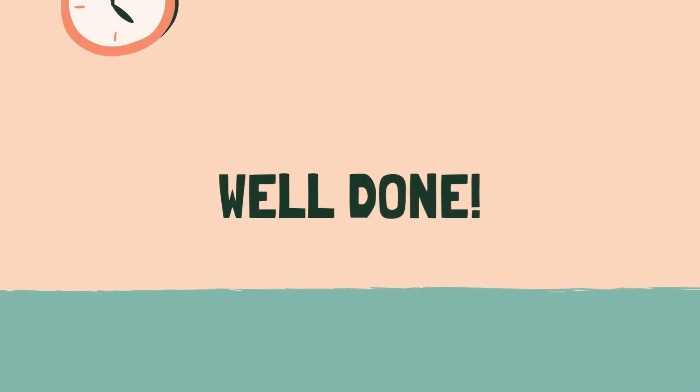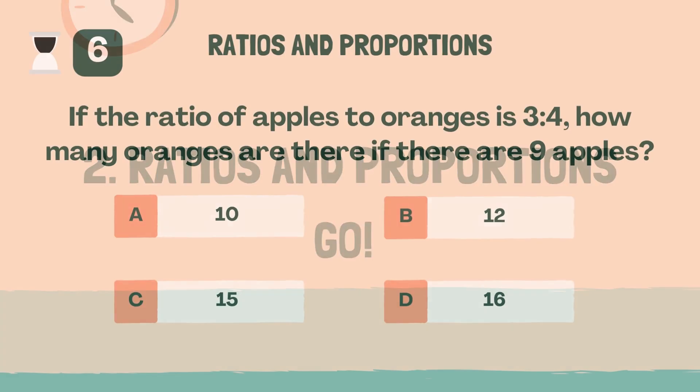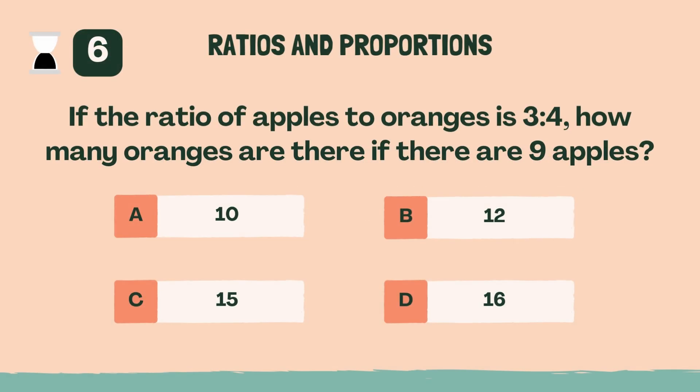Well done. Let's move on to the next category. Category 2, ratios and proportions. Three, two, one, go. If the ratio of apples to oranges is three to four, how many oranges are there if there are nine apples? B, twelve.